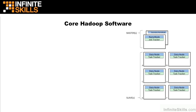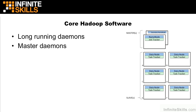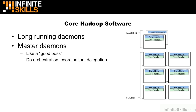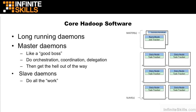The core Hadoop software involves several long-running daemons, and these five daemons need to be up and running at all times. Think of master daemons like a good boss — they do orchestration, coordination, and delegation, and then get out of the way. Slave daemons do all of the actual work, which is storage and processing. The raw blocks comprising the input and output data, as well as the actual processing work itself, are always done on the slaves, never on the masters.